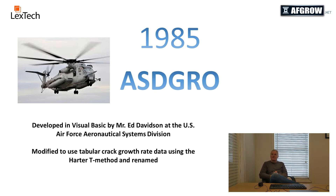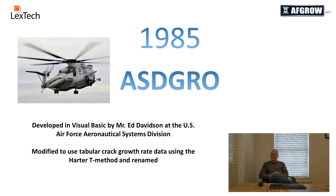A few years earlier, I developed a method to interpolate or extrapolate tabular crack growth rate data using the Walker equation on a point-by-point basis. This became known as the Harder-T method. I was using this method on the H-53, and the Air Force — Dr. Jack Lincoln — asked me to incorporate this method in ASGGRO for use with the H-53 damage challenge analysis effort. I changed the name of this modified version of ASGGRO to ModGRO.